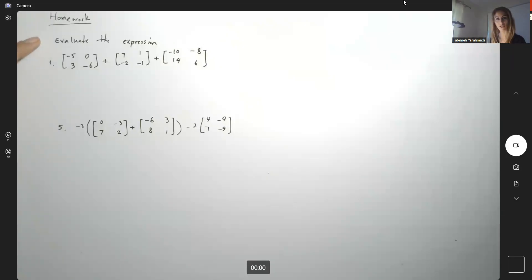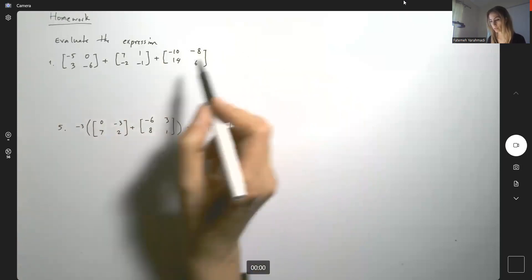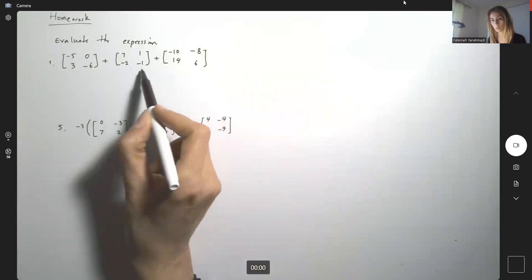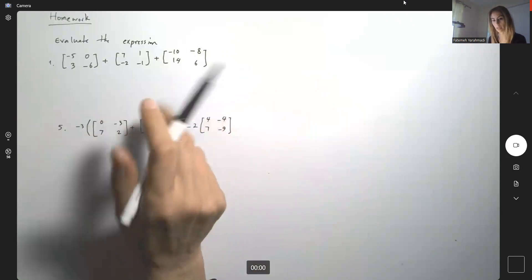The question says evaluate the following expressions. So here you have addition of three matrices. What you can do, you can find the addition between these two and then find the addition of the result for the last matrix.